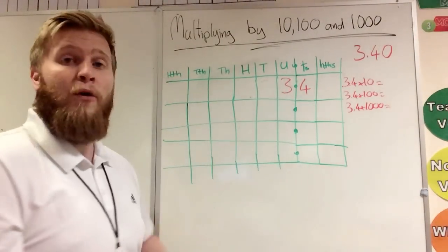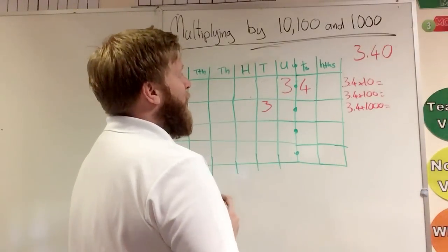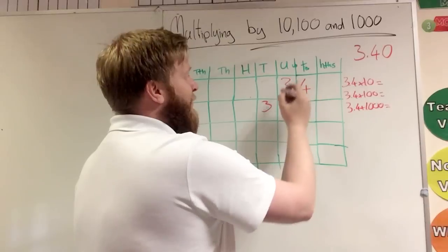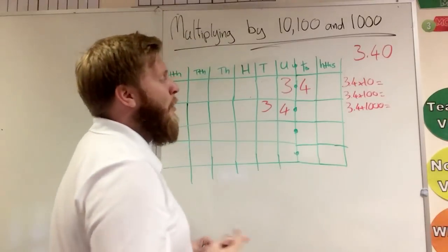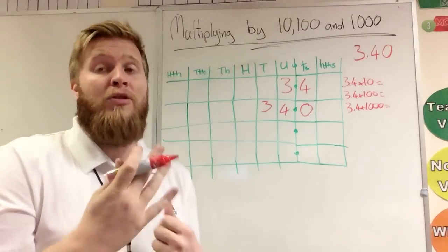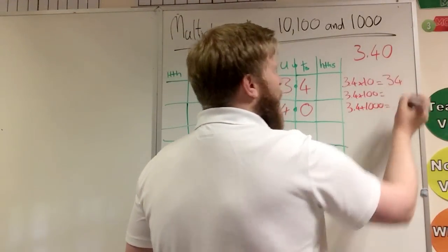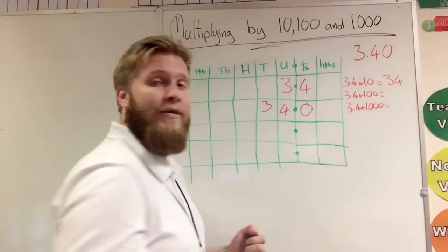So we've got 3.4 there times by ten. We're making this three ten times bigger, becomes a thirty. We're making our tenths ten times bigger, becomes four. Because this is after the point, we don't have to put a zero there. Because 34.0 is the same as 34. I haven't just added a zero.